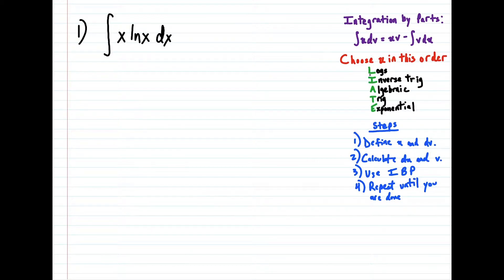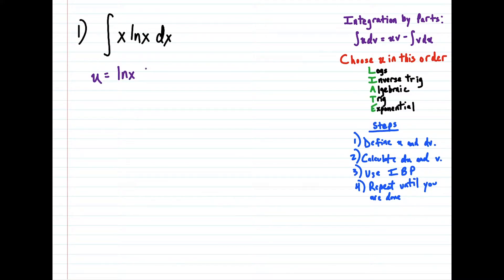The first term we would choose for u would be a log function. Notice we have an algebraic function and a log function, so our u term here would be equal to natural log x. But then we also have to define dv, and dv is essentially just the leftovers: x dx.